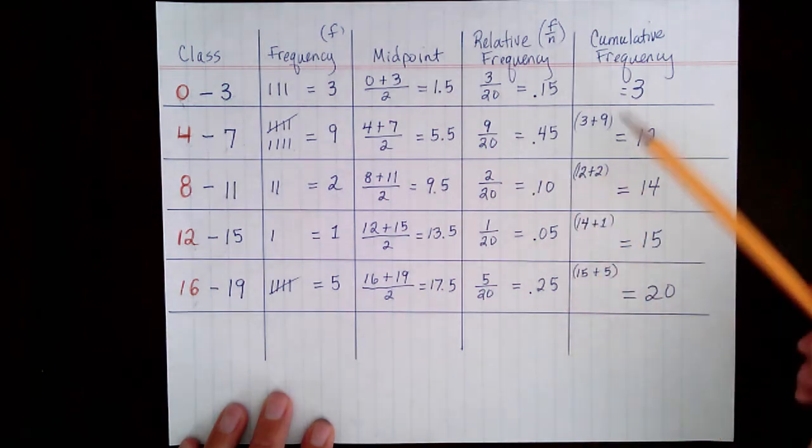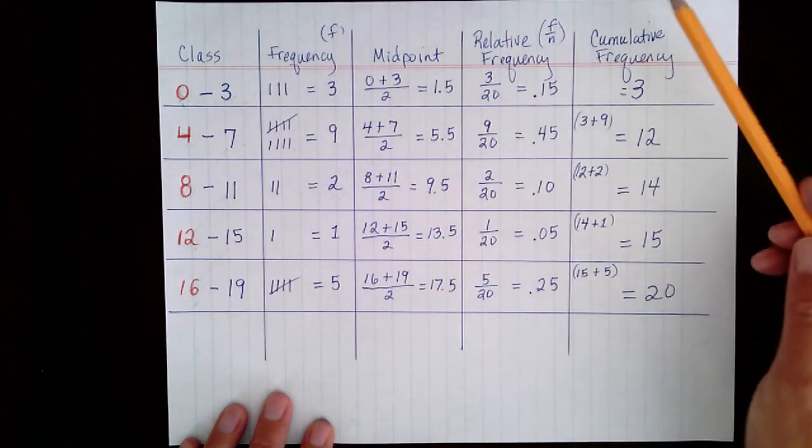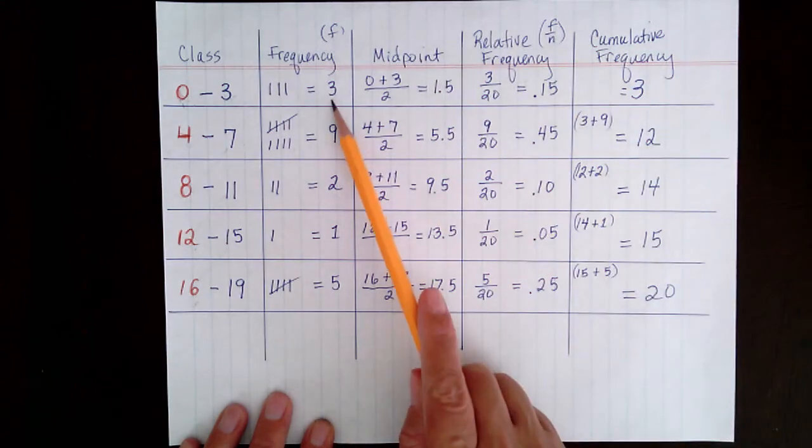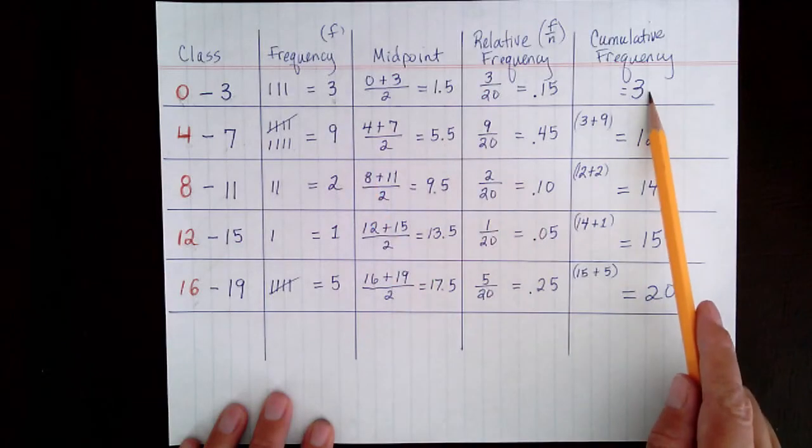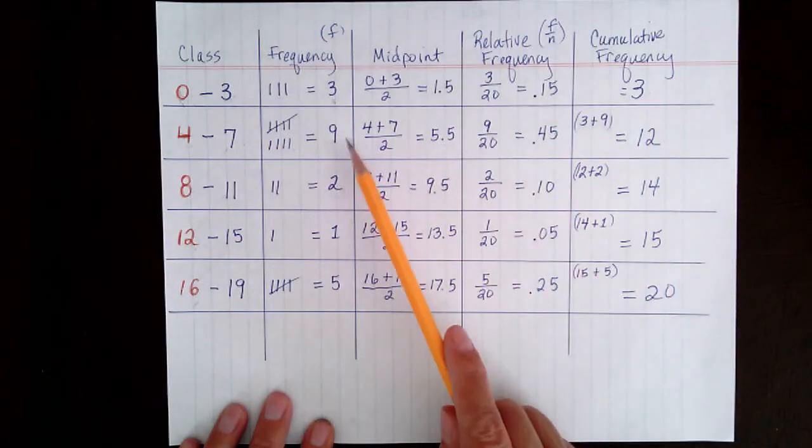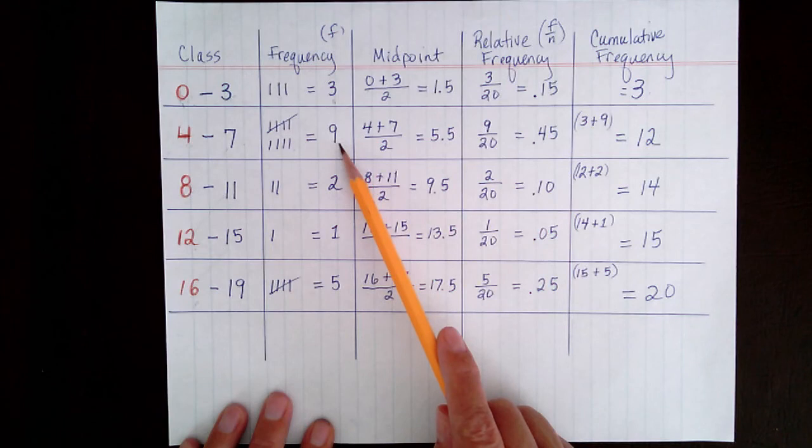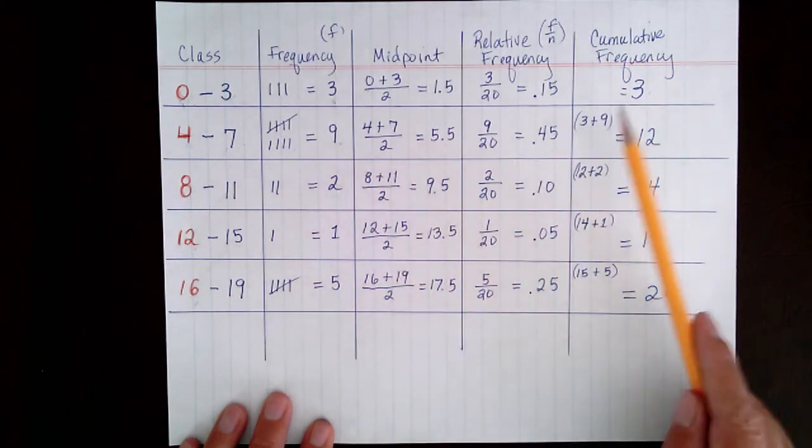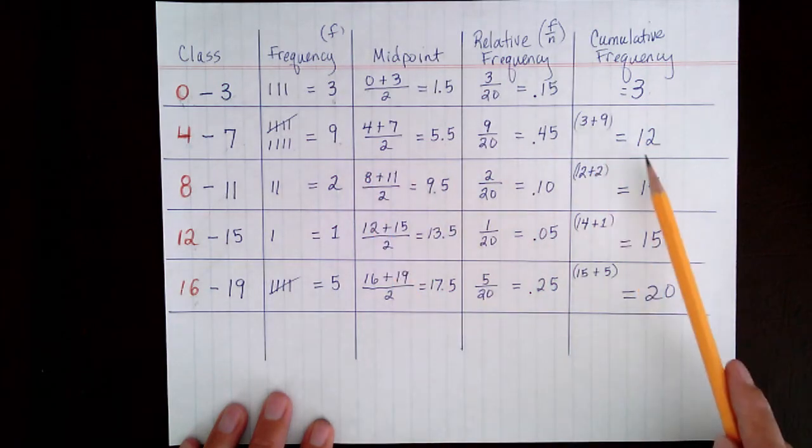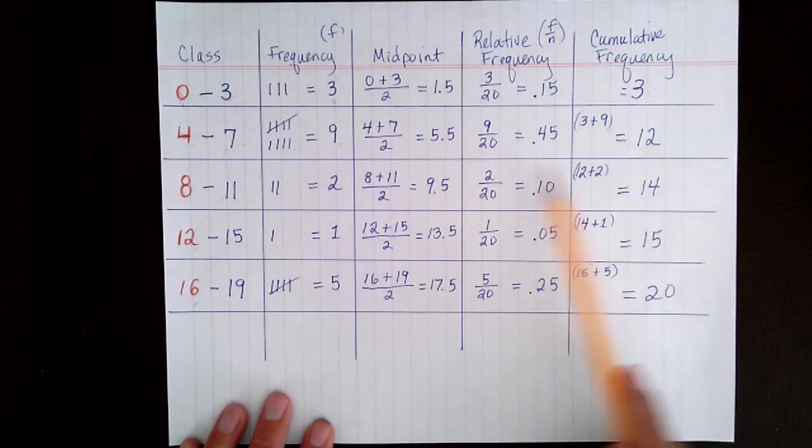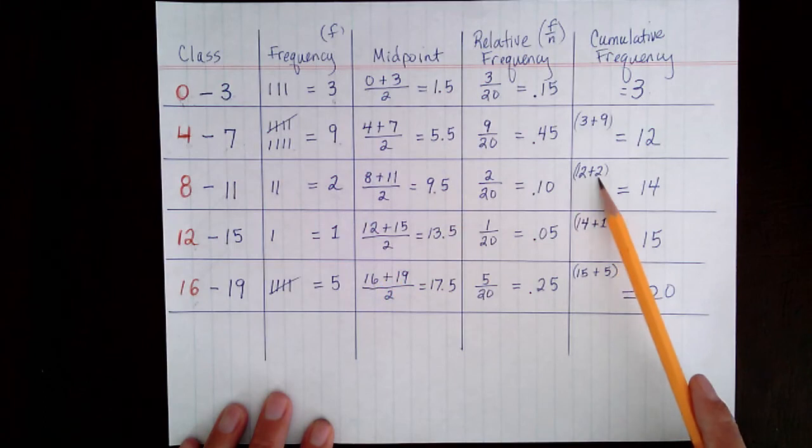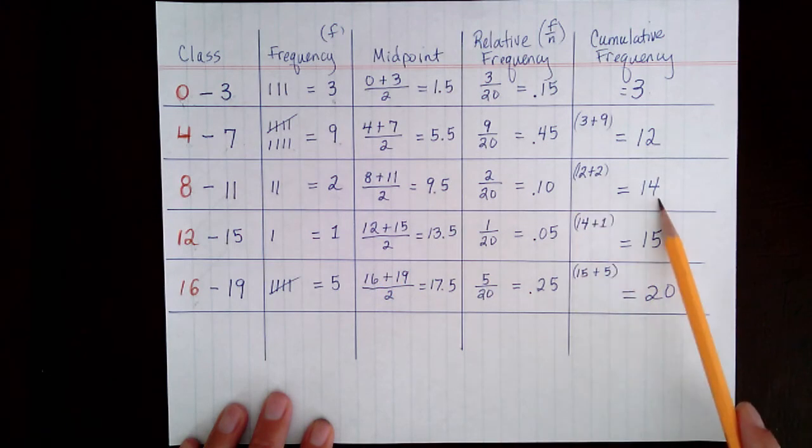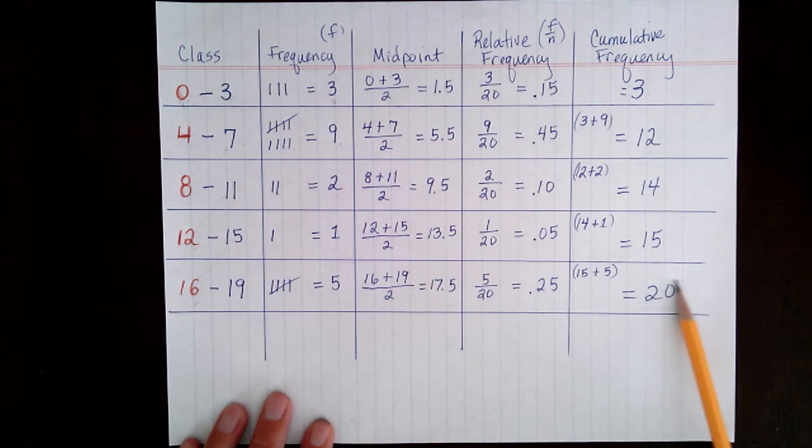Now to find your cumulative frequencies, you start with the first class and you see how many data were used in the first class. There was 3. By the time you get to the next class, we've used 9 more data values. So we add 9 to 3 and get 12. In the next class, we have 2 more data values that we've used. So we add 2 to 12 and we get 14. And so on. Now this last entry should always be the total number of data.